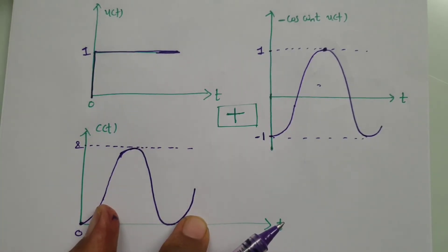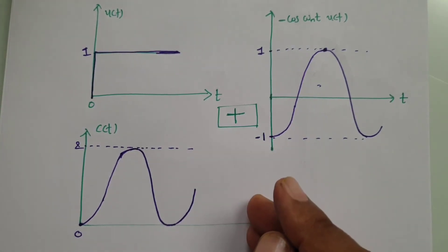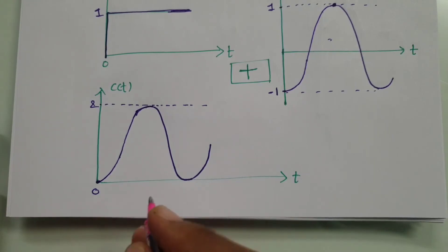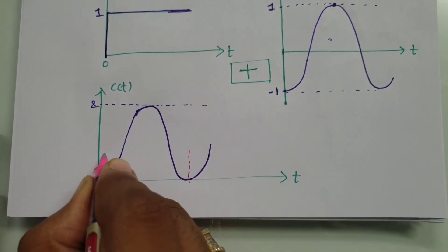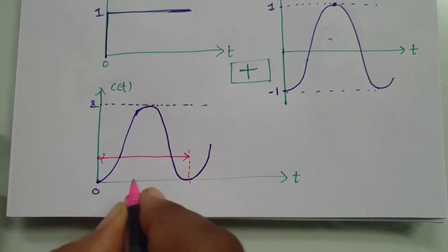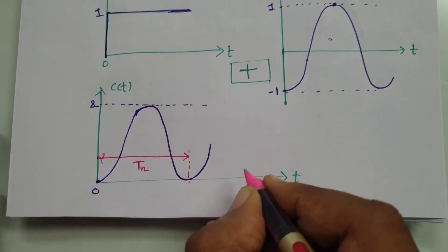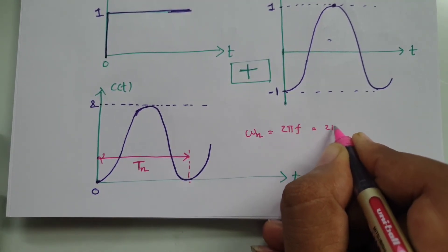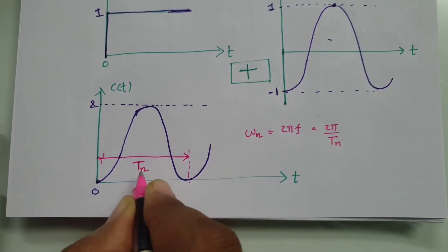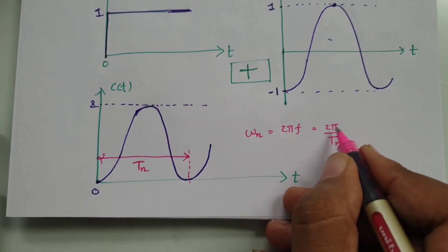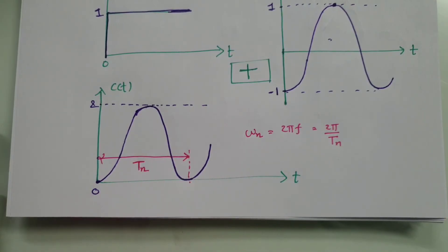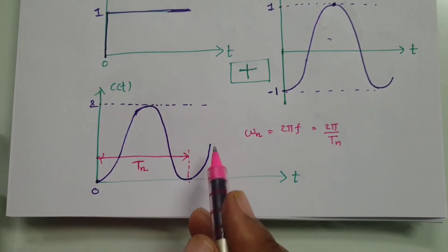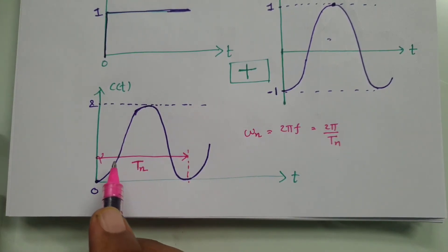So that is the output with unit step response of the second order system. In this output, the oscillation frequency is omega_n. The oscillation frequency is identified from the time period — if we say the time period is T_n, then omega_n equals 2 pi times f, where f equals 1 divided by T_n. For an undamped second order system, the output oscillates continuously in this manner.